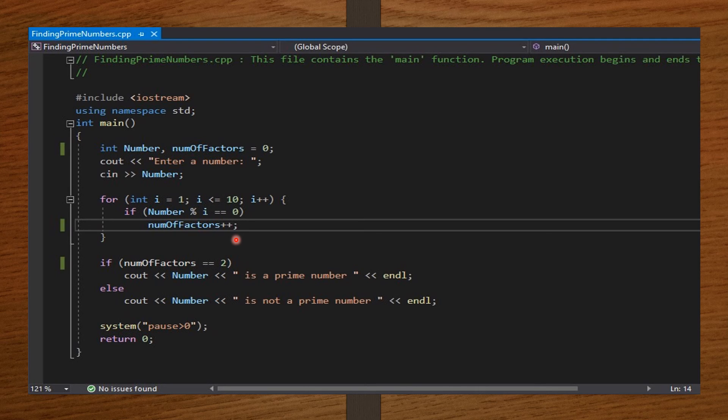Then I set the if statement which is going to check if the number of factors is equal to two, then it's a prime number. Else, if the number of factors is not two, then that particular number is not a prime number. So I end my code with system pause and then return zero. This will ensure that only the needed information will be displayed when we run our code, and return zero is just by custom.